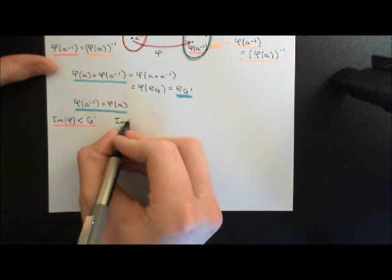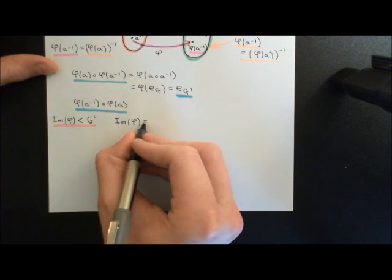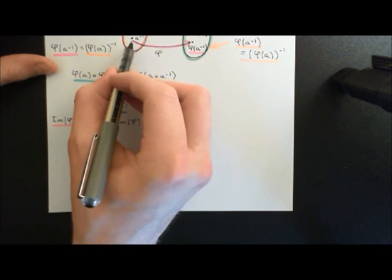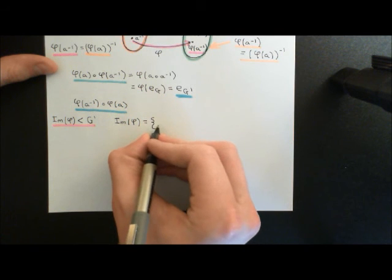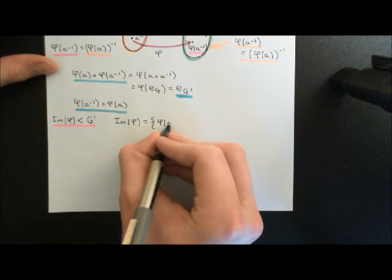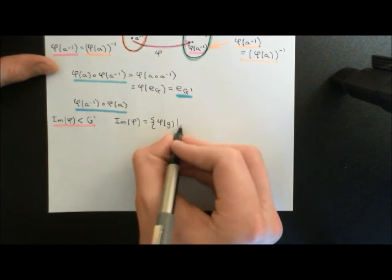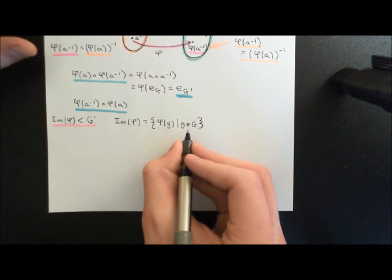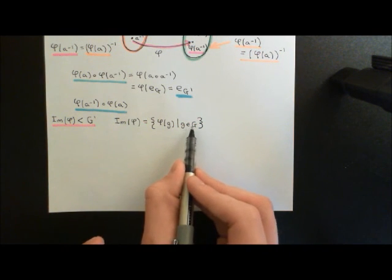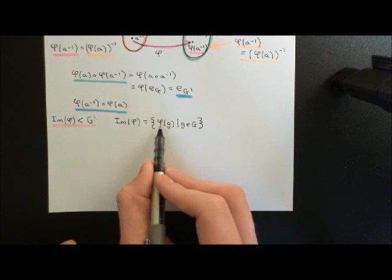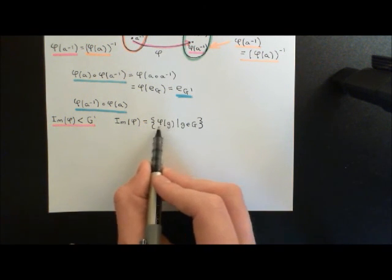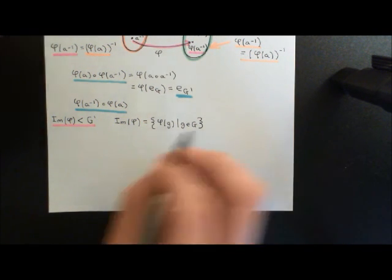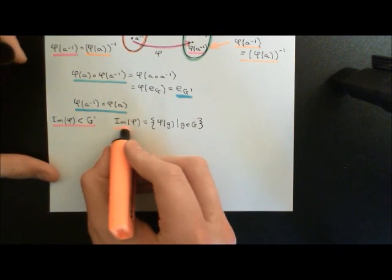In abstract notation, the image of a homomorphism is all the elements of the codomain group G prime which have elements in the domain group G being mapped onto them. We can write it as the set containing all things of the form phi of little g, where little g is an element of big G. Basically, you go through every single element in the domain group and take what that element is being mapped onto, and stick them all into a set.